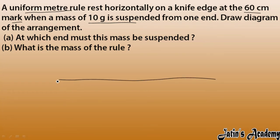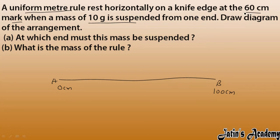A meter rule means the total length is 100 centimeters — mark zero at one end and 100 centimeter at the other. The knife edge is at 60 centimeter. The center is at 50 centimeter, so 60 centimeter is slightly to the right of center. So at 60 centimeter we have our knife edge or fixed point.